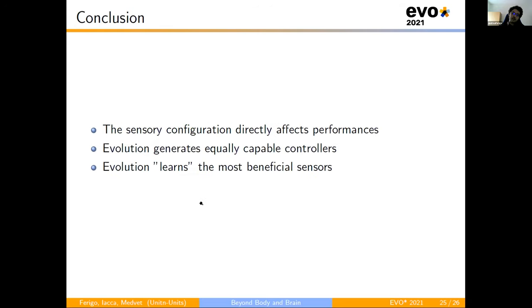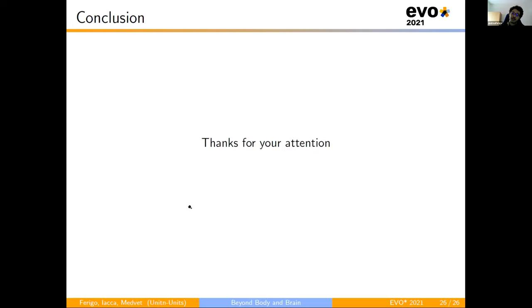Summarizing and concluding, in this work, we see how the sensory configuration directly affects the performance, how the evolution is able to generate equally capable controllers, and how the evolution learns what are the most beneficial sensors for locomotion. Thanks for your attention.